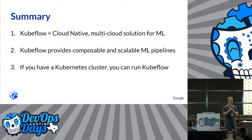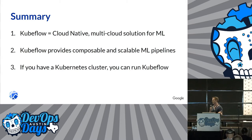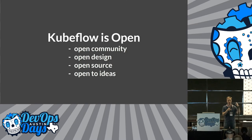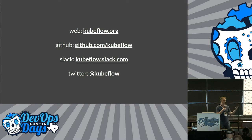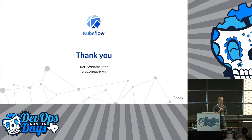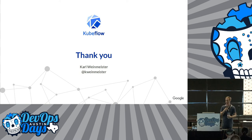In summary, Kubeflow is a cloud-native multi-cloud solution for ML. It gives you pipelines, and if you use Kubernetes, you can run your ML on top of it. It's an open community — lots of vendors, multiple clouds. We have calls every other week, we have a Slack channel. Love to have more people. Give it a try as machine learning and AI are a bigger part of development and applications. There's contact information — our Twitter, Slack, and the GitHub if you want to try it out. Thanks again.